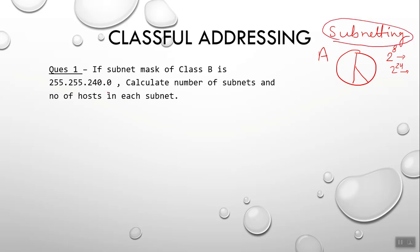The subnet mask of Class B is 255.255.240.0. Calculate the number of subnets and number of hosts in this subnet. There are a few ways to solve this question.